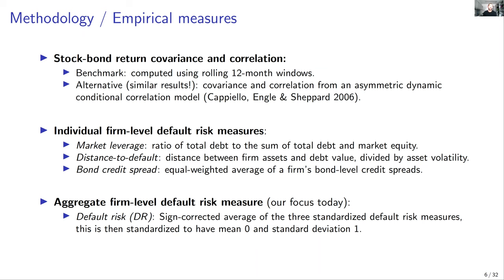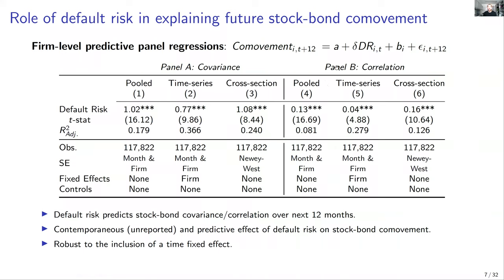The main result: we regress subsequent co-movement measures — measured from month t+1 to t+12 — against our default risk measure at time t, in a panel Fama-MacBeth setup with and without firm fixed effects. Panel A shows covariance as the dependent variable, panel B shows Fisher-transformed correlation. The statistical significance is very high across all specifications, and with one single variable — default risk — the R-squared values are quite substantial.